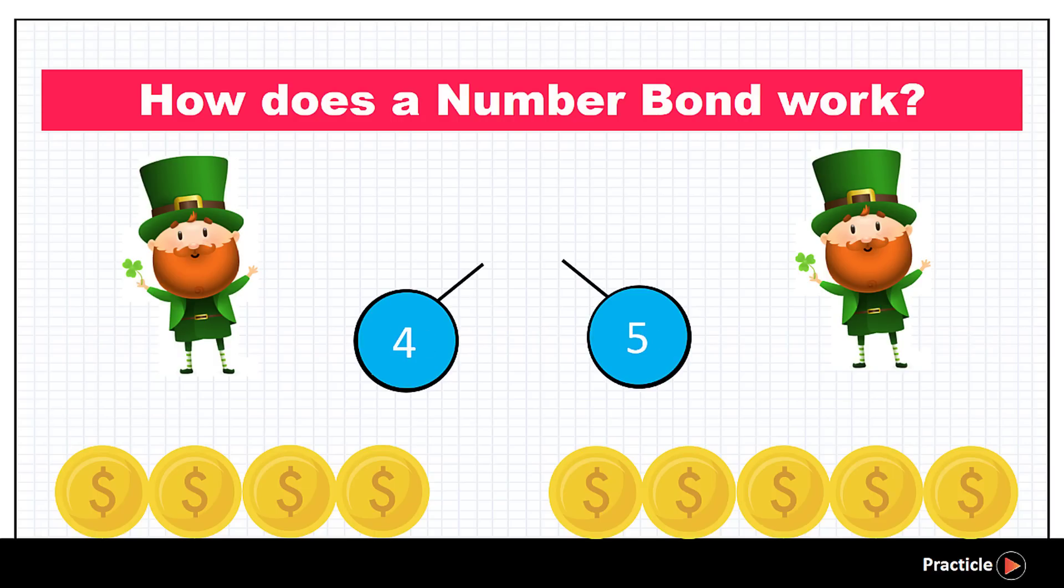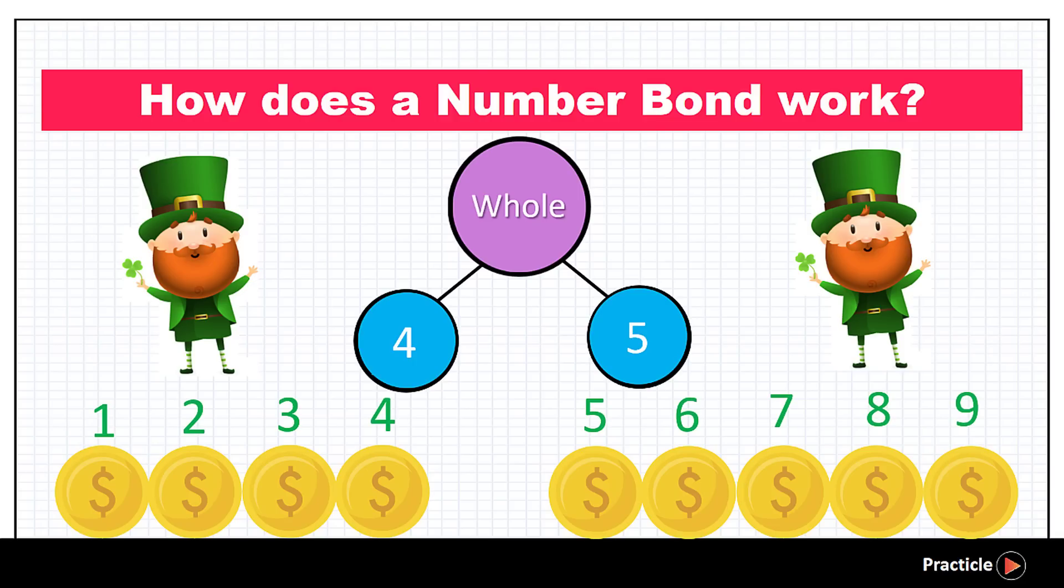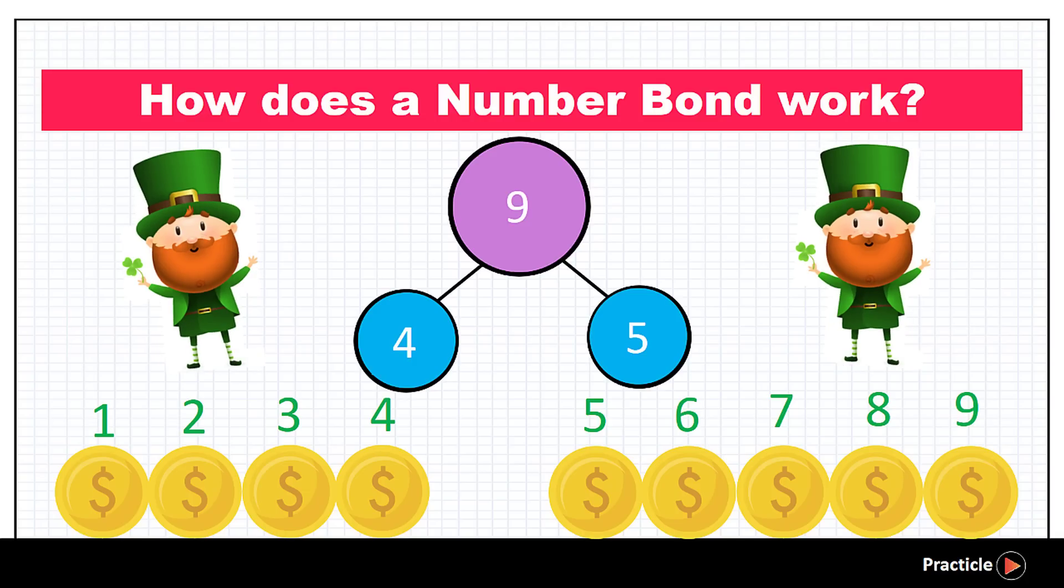So far so good? Then what should we do to complete the number bond? Do you know what's the missing whole? Let's count how many shiny gold coins we have when we put the coins together. Okay? Looks like we have 1, 2, 3, 4, 5, 6, 7, 8, 9. 9 gold coins. Well, someone's getting rich.